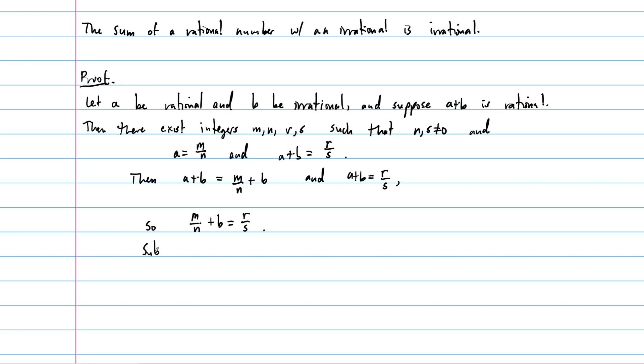So let's just write out what we're doing here. Subtracting M over N, we obtain the following: that B is equal to R over S minus M over N. But that's the same as N times R minus M times S over N times S.